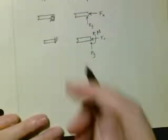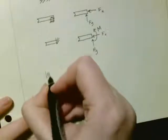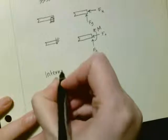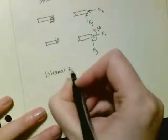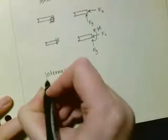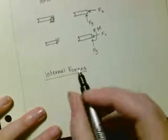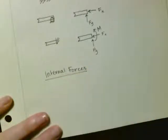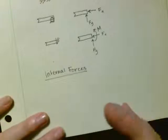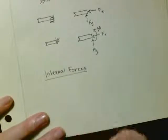So the other thing that is key in this is internal forces. Internal forces act between adjacent particles. And they always occur in collinear pairs such that they have the same magnitude and act in opposite directions.